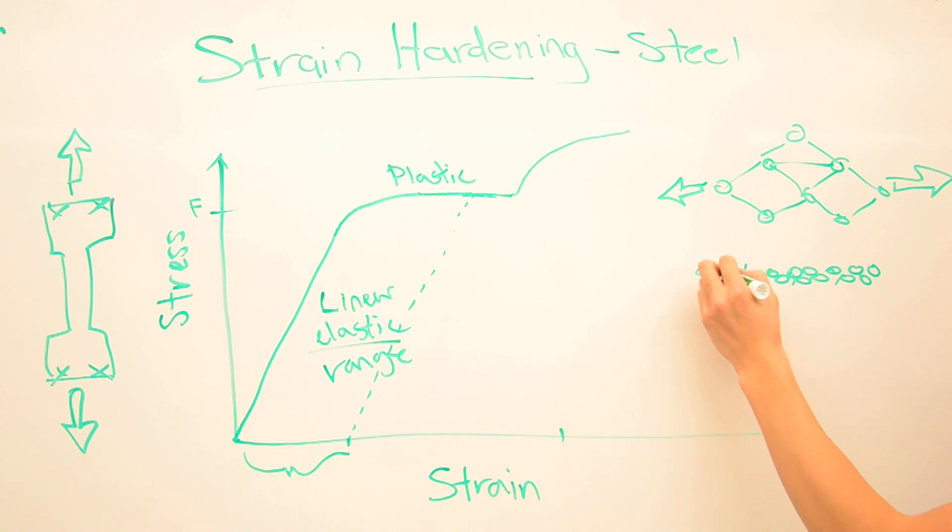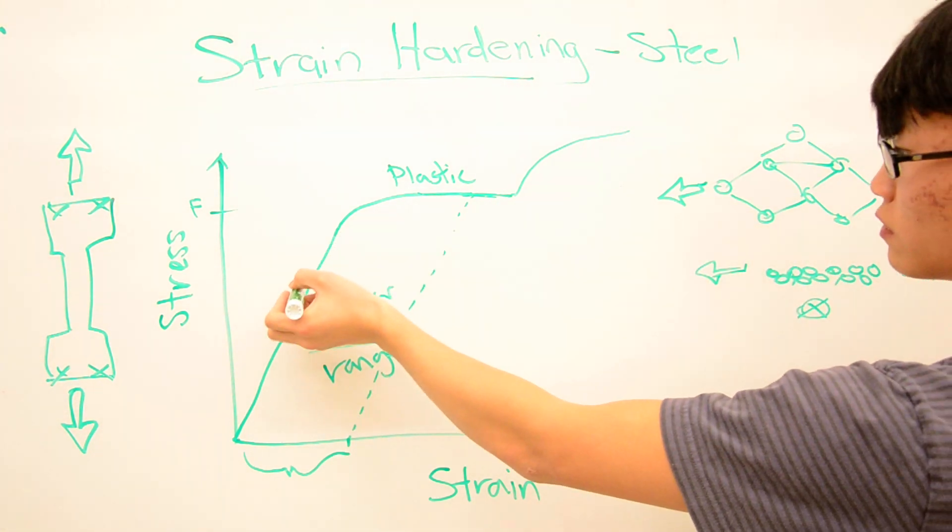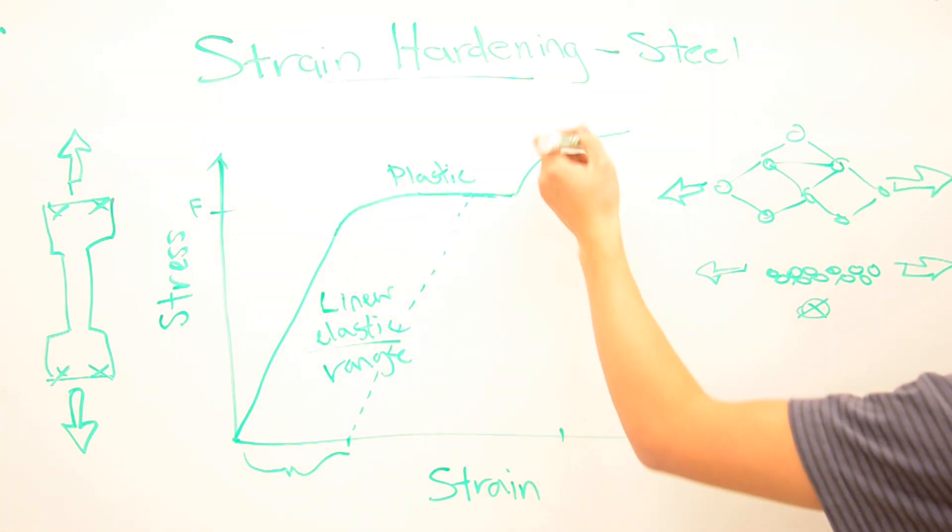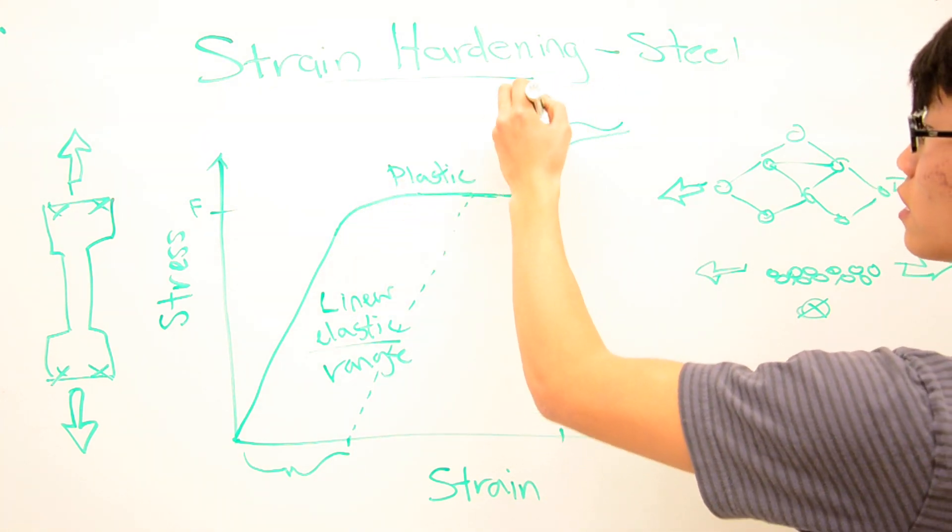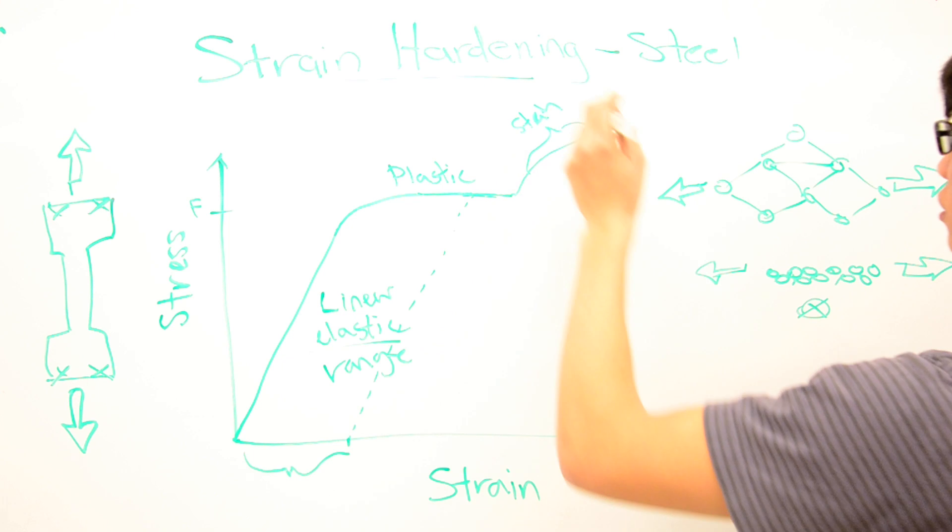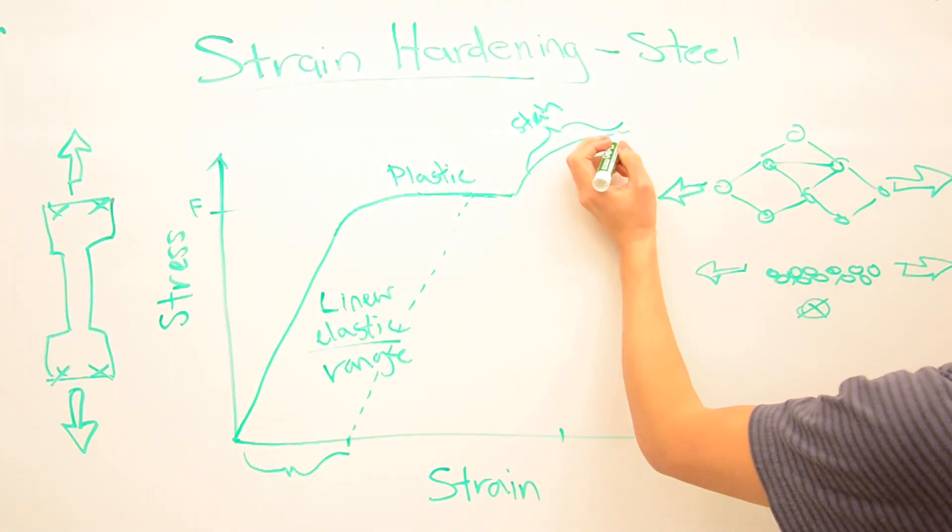And now, as you pull, it actually starts to resist that pull once more, even though it seemed to not resist it for a while. So this is called strain hardening in this region right here. Only a couple materials do this, so it really depends on the molecular makeup of the material.